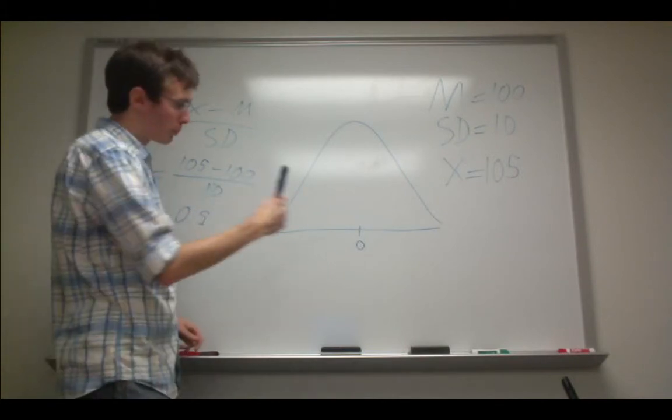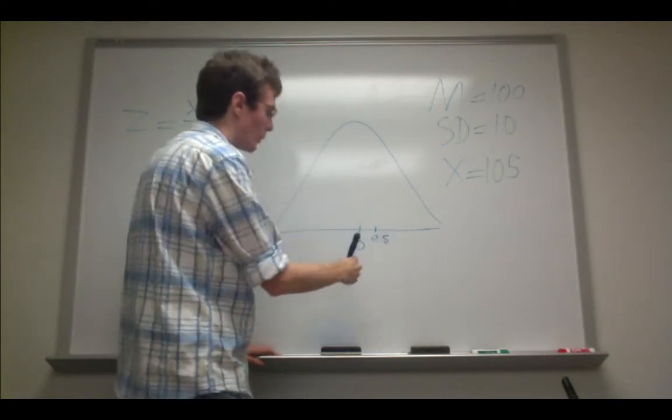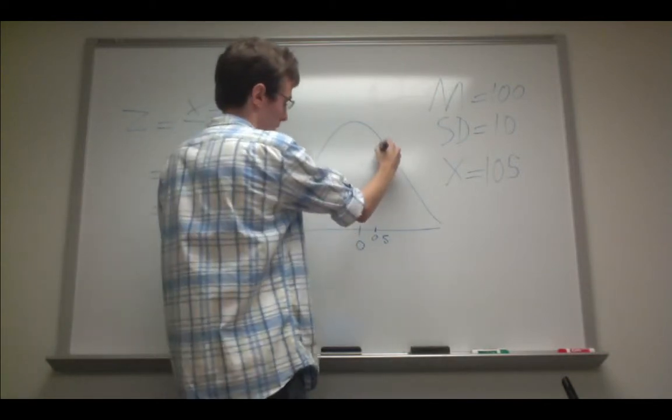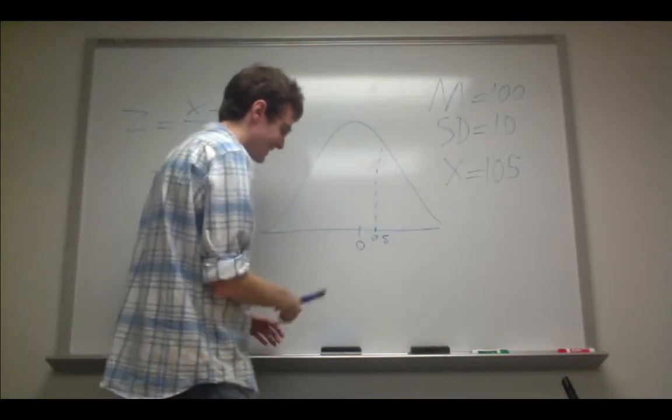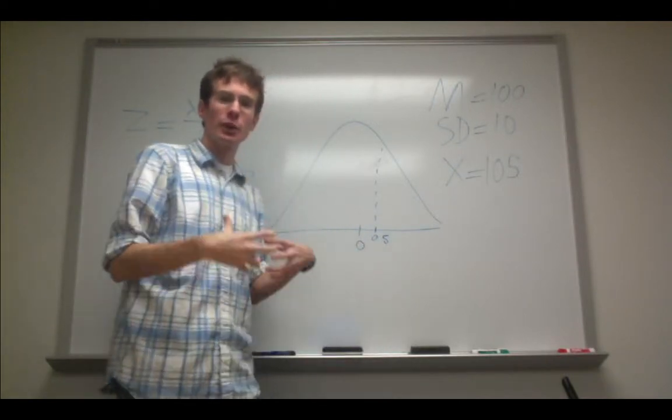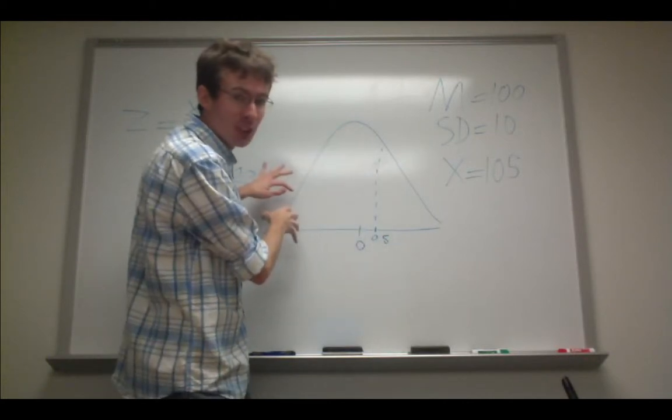If we wanted, we could plot this on this z-distribution, might be right about there. And then we could calculate a percentile rank. And we have these z-tables telling us what z-score is associated with what percentage of this distribution at or below that score.